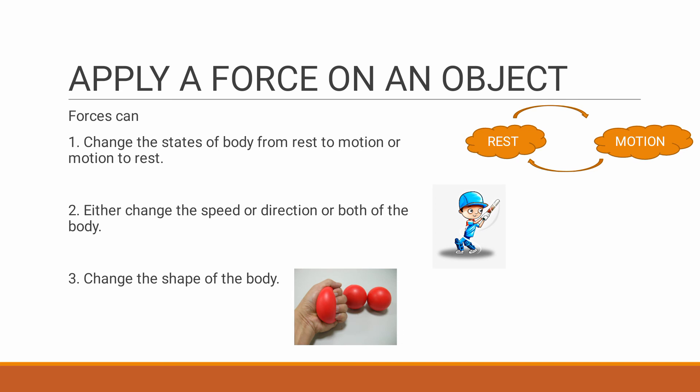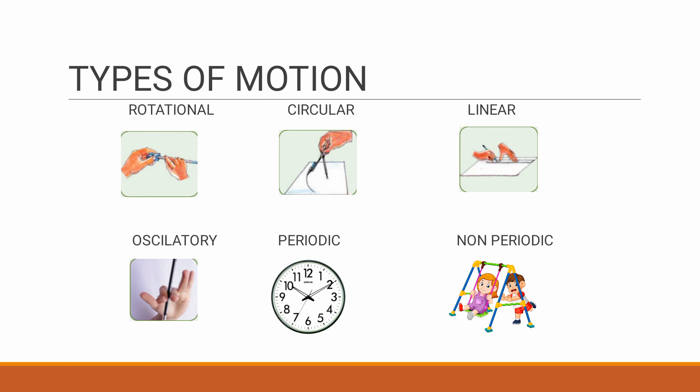Last topic of this video is types of motion. There are different types of motion. They are rotational motion, example is fan because it rotates in its axis. Next one, circular motion, example is pencil in a compass, it moves in a circular path. Linear motion, example is drawing a line, it is about a straight line.